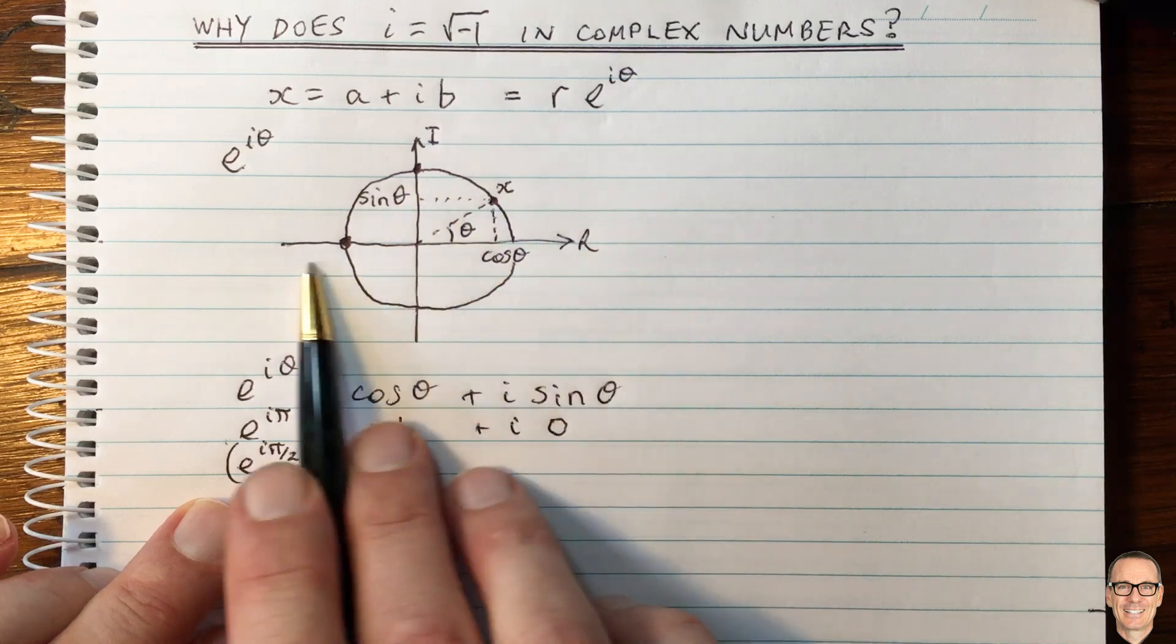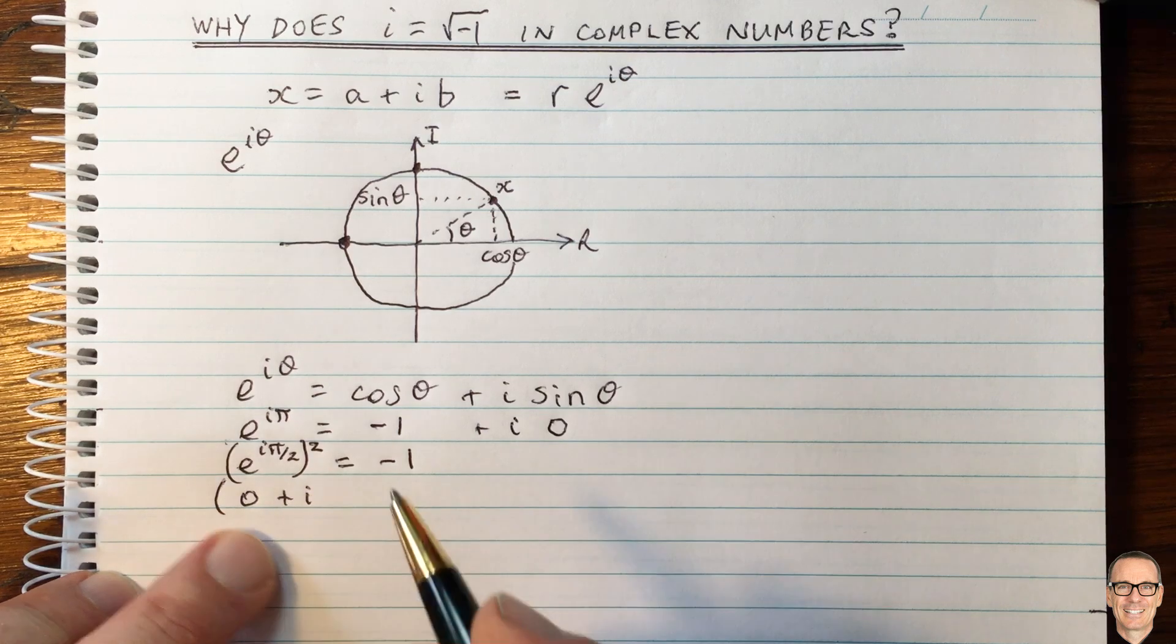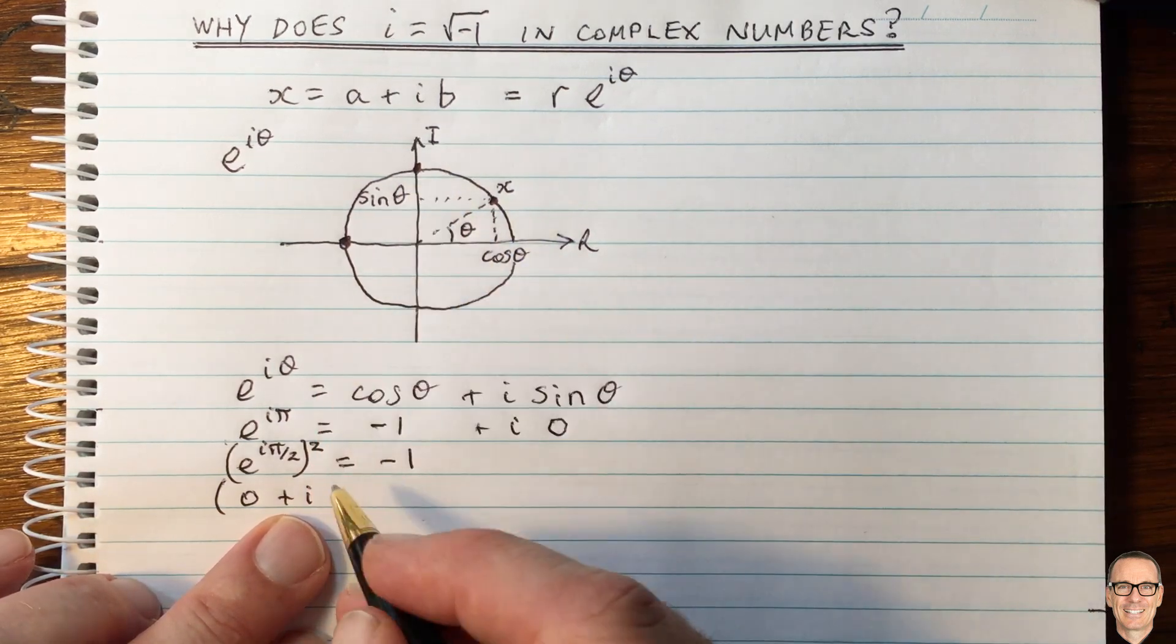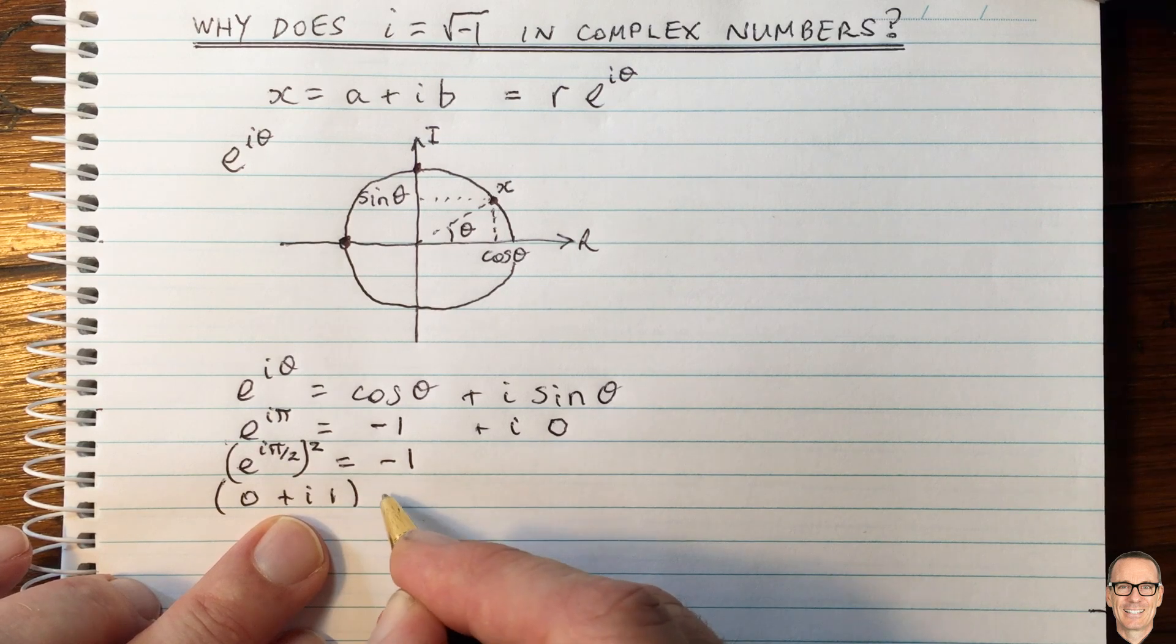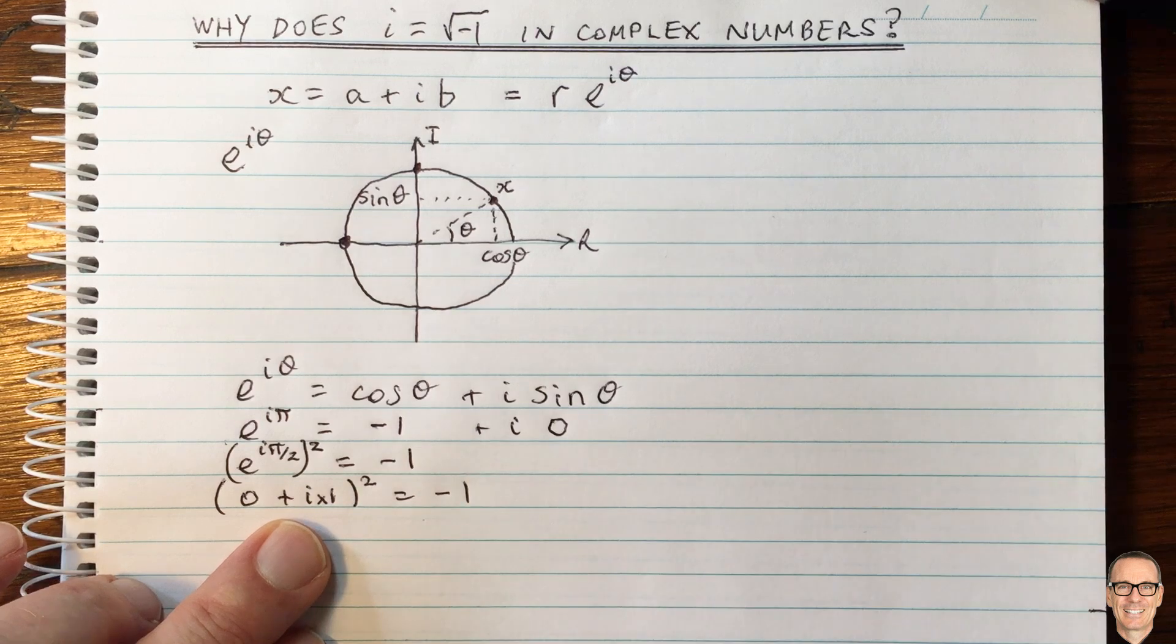And that value has a real value, which equals 0. So inside the brackets here, we're now going to have 0 for the real part, plus i times the complex part, which is going to equal 1. And so now we've got this thing squared, so that's i times 1, equals minus 1.